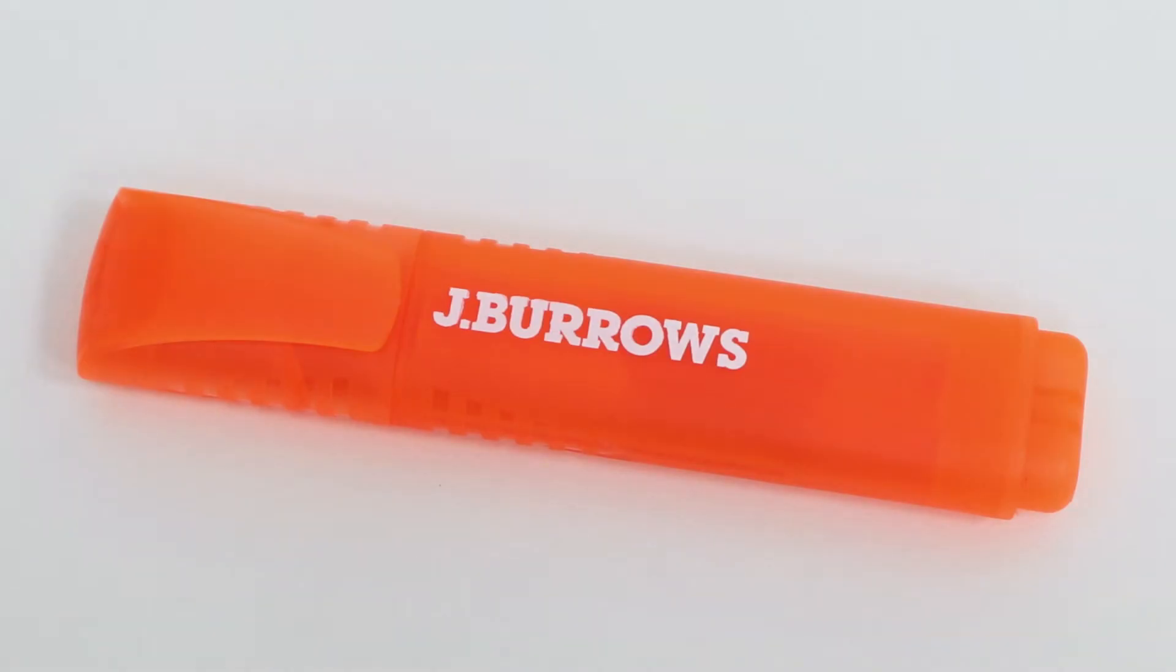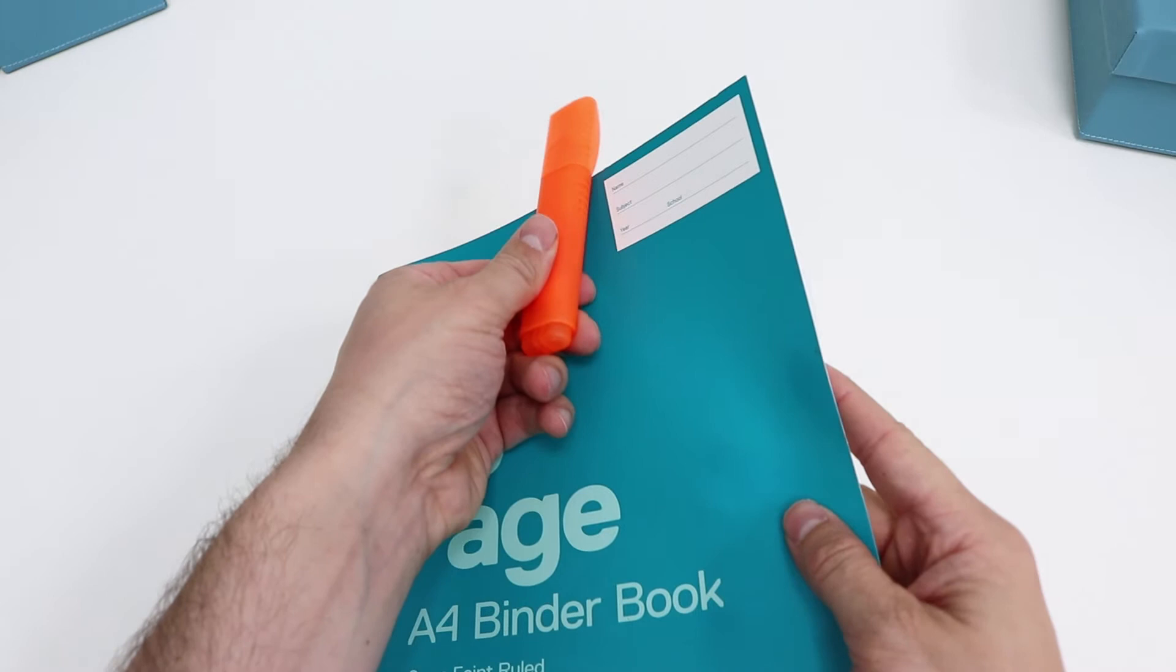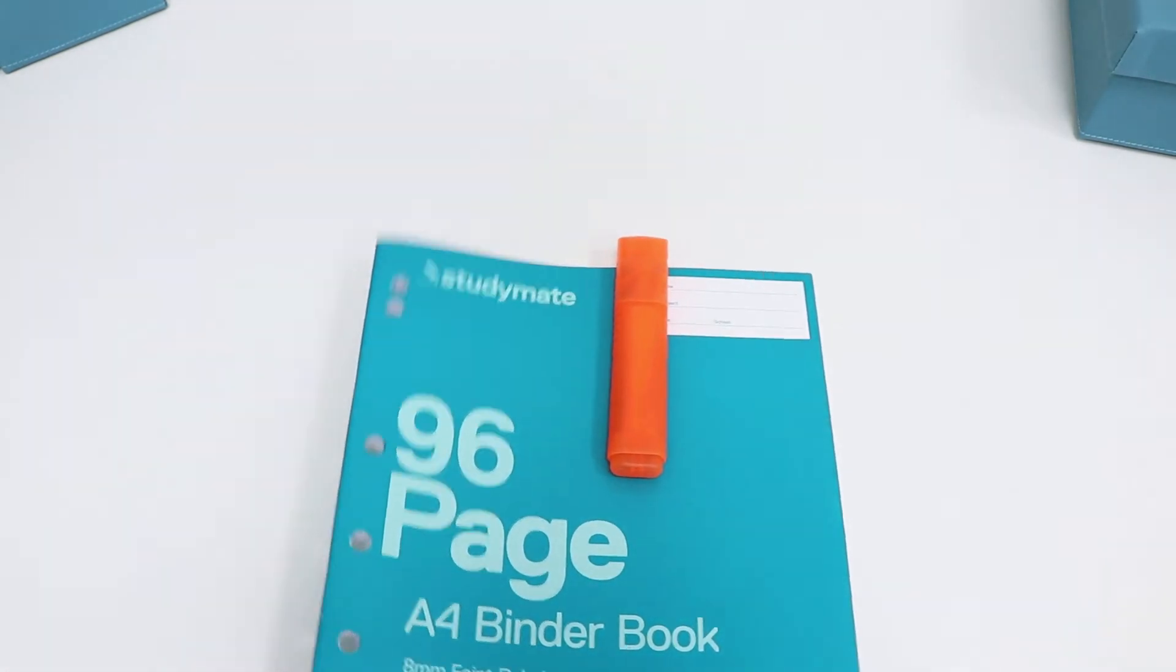They have a rectangular design to ensure that they don't roll away when you put them down, and the lids have a pocket clip making them easy to take on the go.